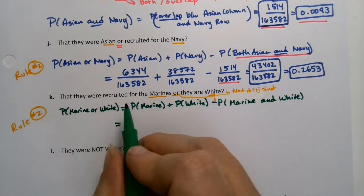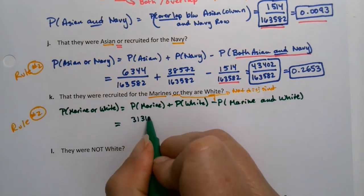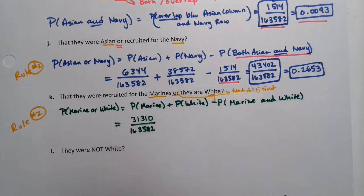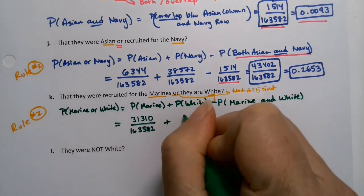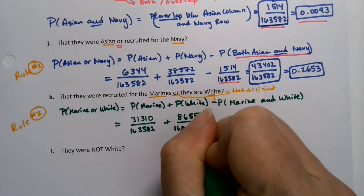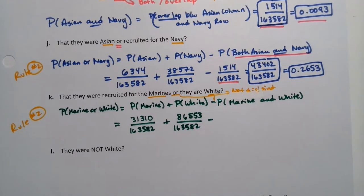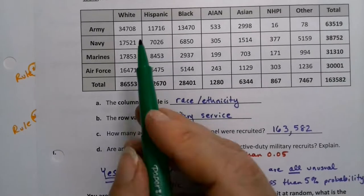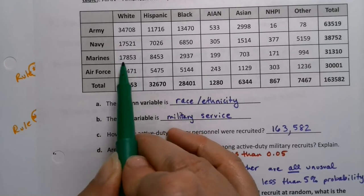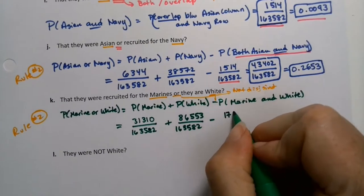Okay. So I'm just going to put that 'not disjoint' bit over here so I have room. Marines - looking at the table, there were 31,310 Marines recruited in 2018. And then for white, it was 86,553. And then we want to subtract away the overlap and that overlap - you want where white and Marine intersect. And it's right here, it's 17,853. So I'm going to take that away, 17,853.